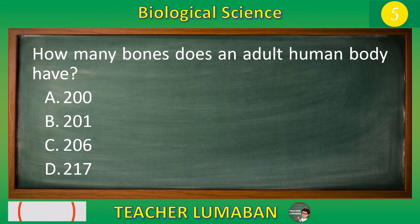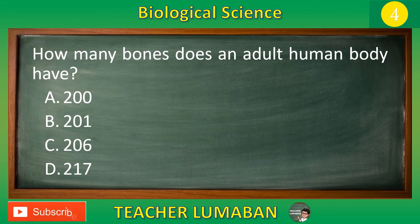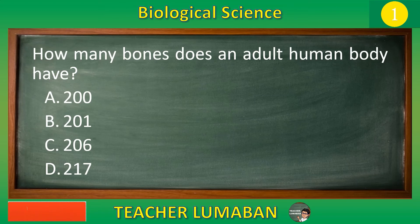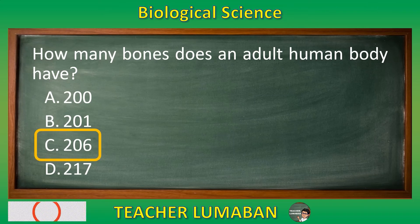5, 4, 3, 2, 1. The correct answer is Letter C: 206. An adult human body has 206 bones.